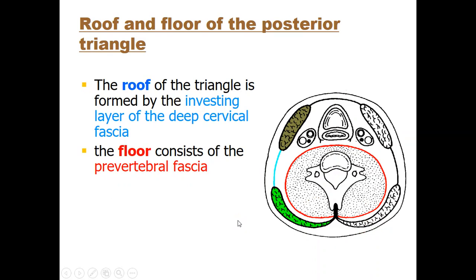The posterior triangle is a three-dimensional spatial region with a roof and a floor. The roof is composed of the investing layer of deep cervical fascia, while the floor is formed by the prevertebral fascia, shown by the red line in the figure, which invests the prevertebral muscles.